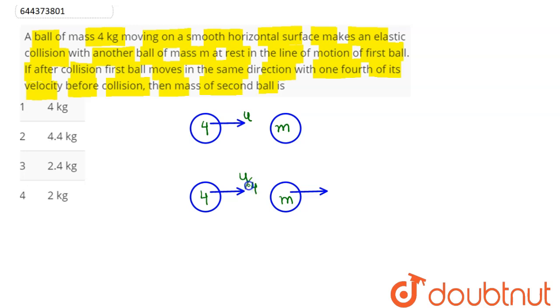Since the collision is elastic, we can apply momentum conservation of the system. So 4 times u equals - initial momentum of mass m will be 0 - so equals 4 times u by 4 plus m times v. Hence 4u comes out to be u plus mv.